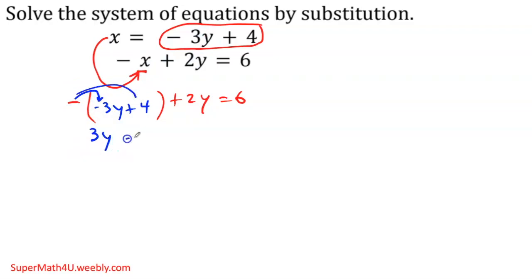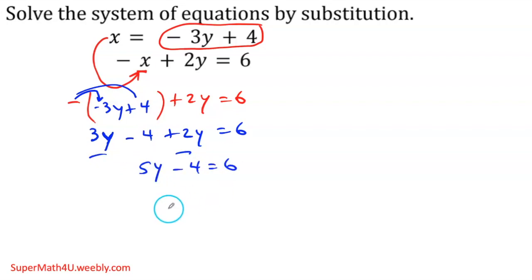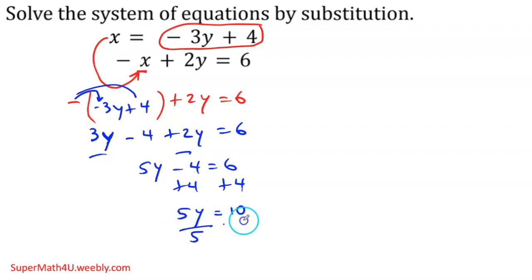From here I need to be careful — distribute that negative. Negative times negative is positive, negative times positive is negative. By the way, this is a y — it looks like a 4. Then I'll bring everything else: 2y equals 6. Combining 3y and 2y gives me 5y, and now we're solving for y: plus 4. So 5y equals 10, divided by 5, and the y value is equal to 2.